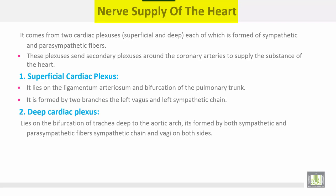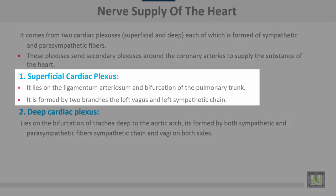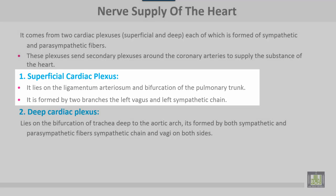The nerve supply of the heart comes from two cardiac plexuses: the superficial and deep cardiac plexus. Each cardiac plexus is formed from sympathetic and parasympathetic fibers. These plexuses send secondary plexuses around the coronary arteries to supply the substance of the heart. The superficial cardiac plexus lies on the ligamentum arteriosum and the bifurcation of the pulmonary trunk, and is formed by branches from the left vagus and the left sympathetic chain.